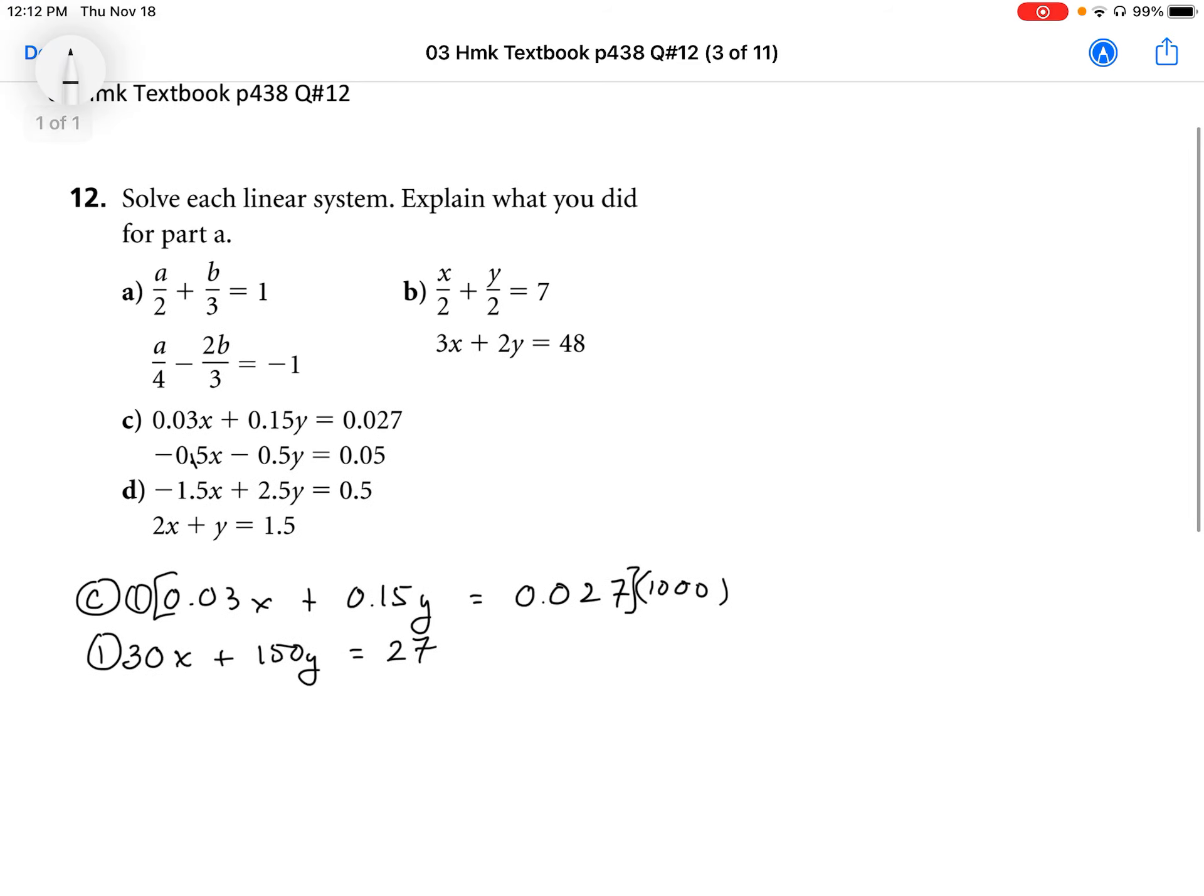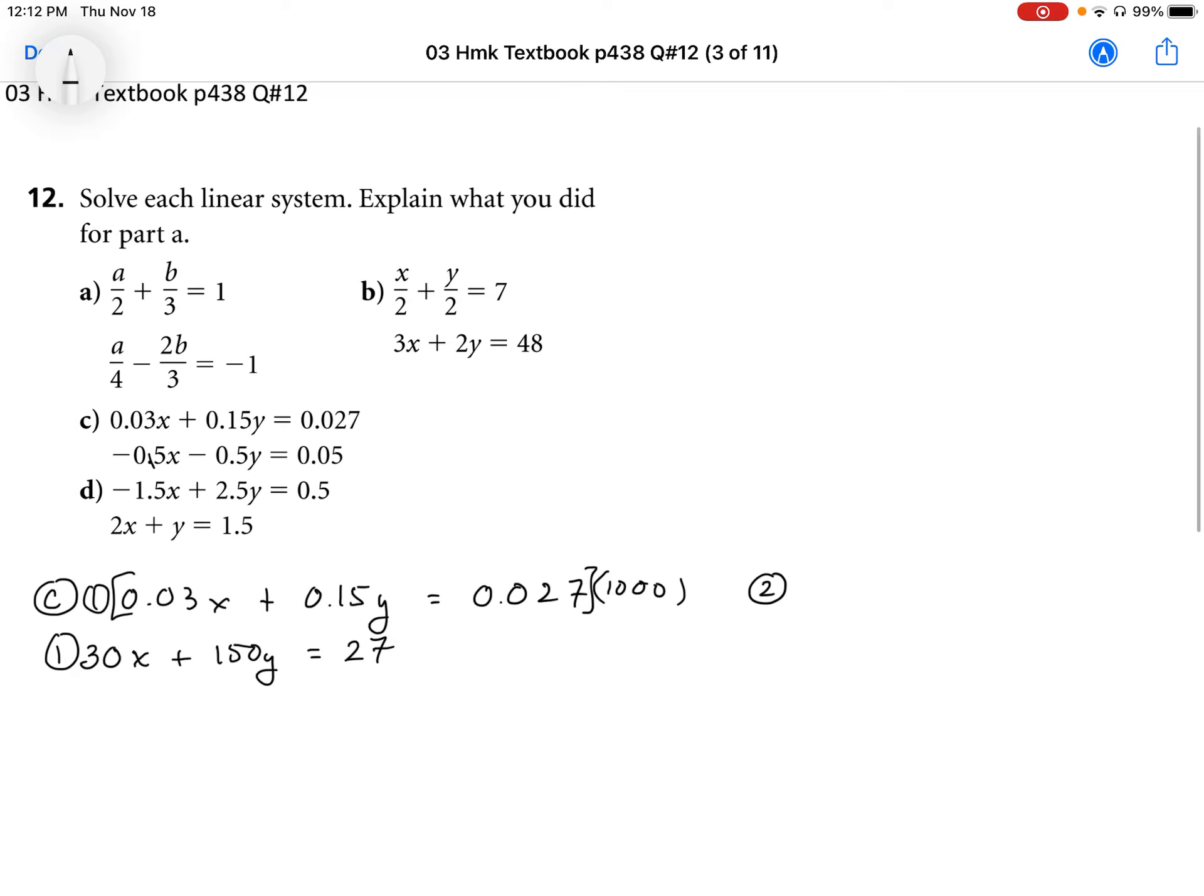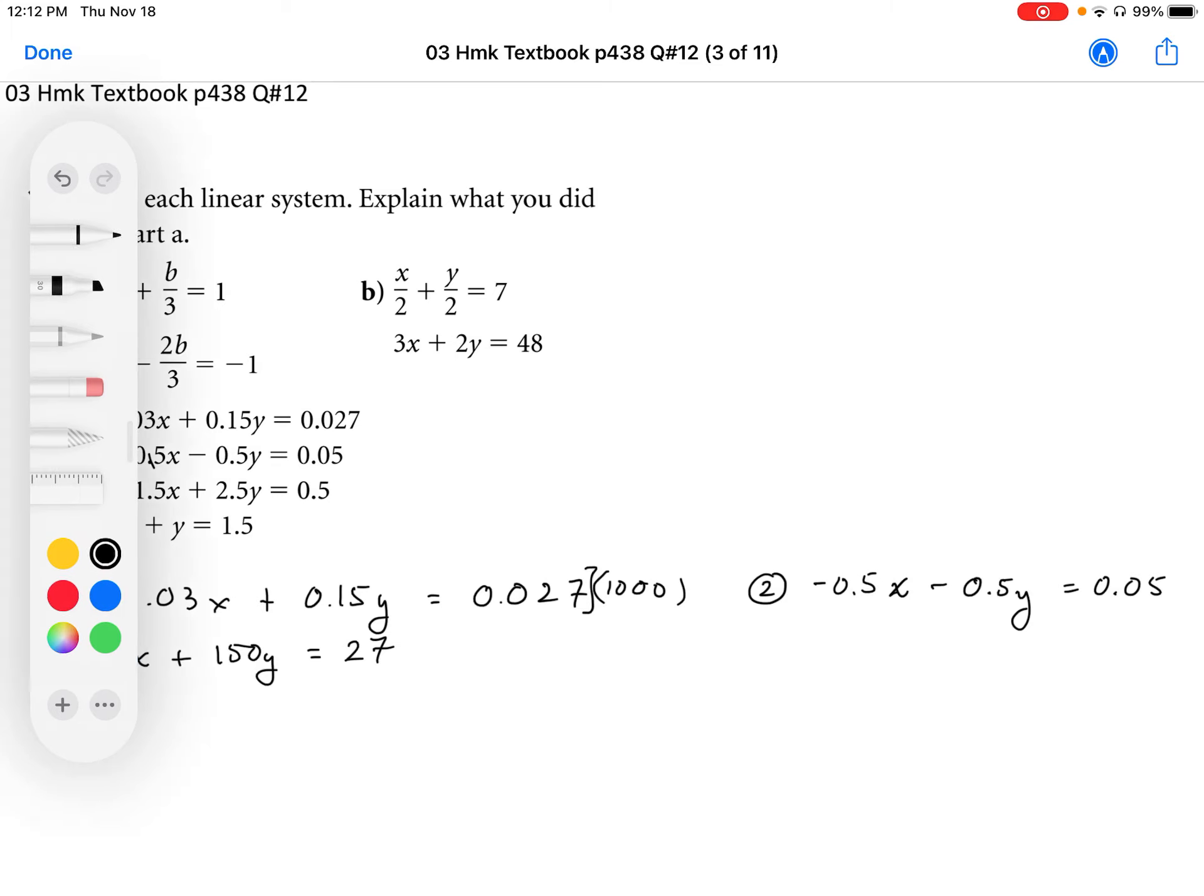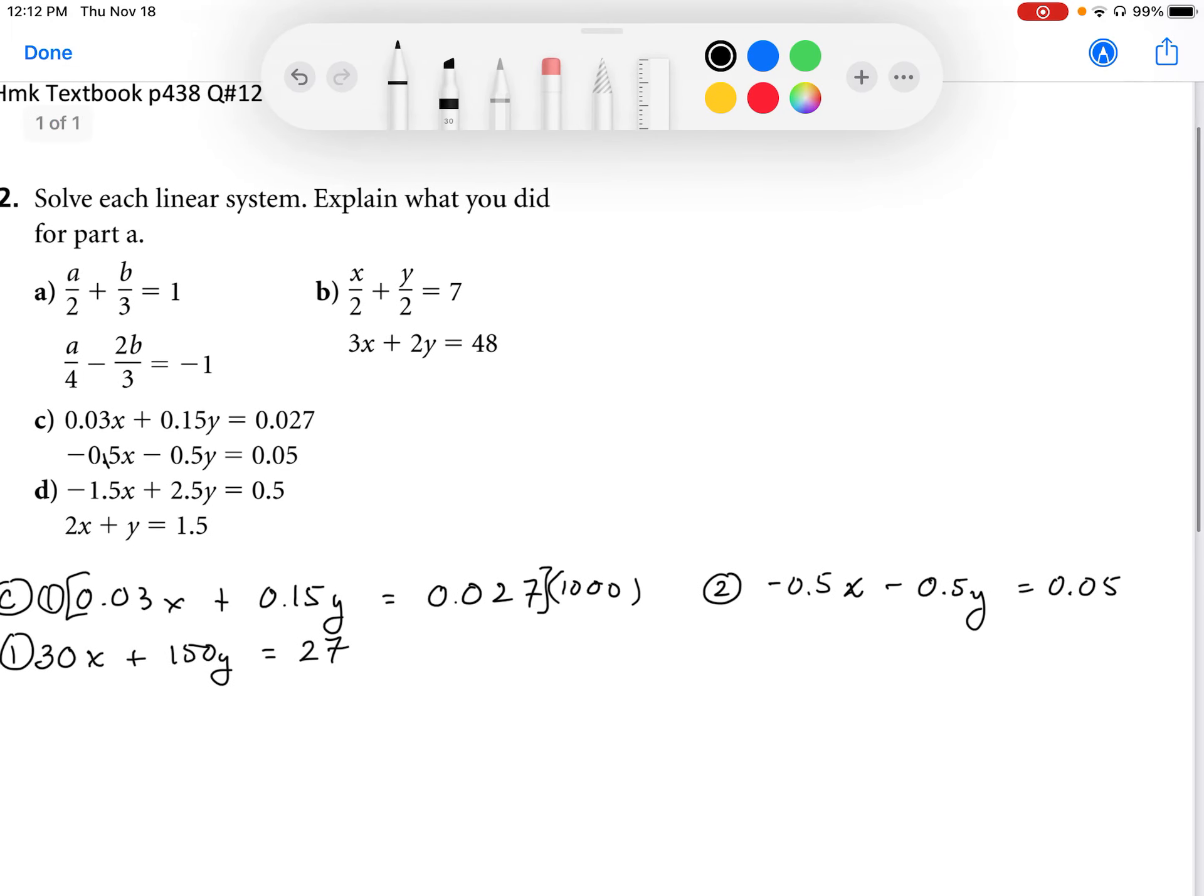And then I can do the same thing for the second equation. So I'm going to take a look at the second equation. In this case here, I have negative 0.5x, and then minus 0.5y, and that's equal to 0.05. Again, I want to get rid of all the decimals.